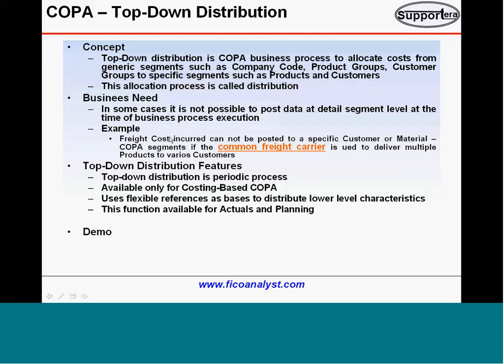A good example is if you have a freight cost which is incurred — it cannot be posted to a specific customer or a specific material. If you are using a common carrier delivering multiple products to various customers, for example, you have one truck and you are spending $5,000 to deliver, and that truck has 10 different kinds of products going to 10 different customers. How can you say this is my freight cost and allocate this much to this customer and this much to this product? It is not possible.